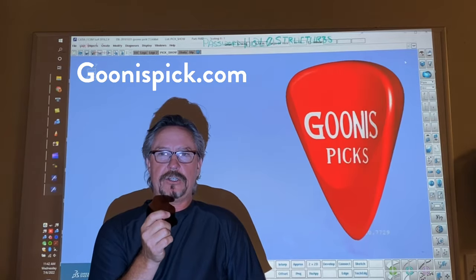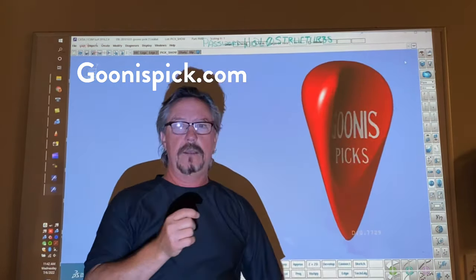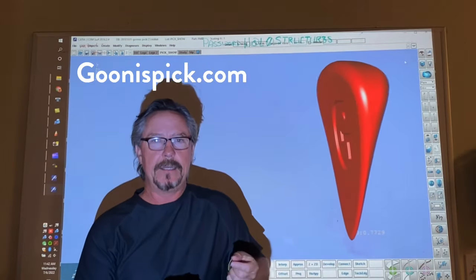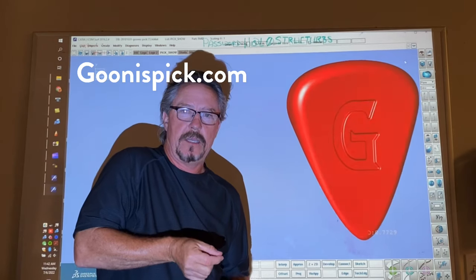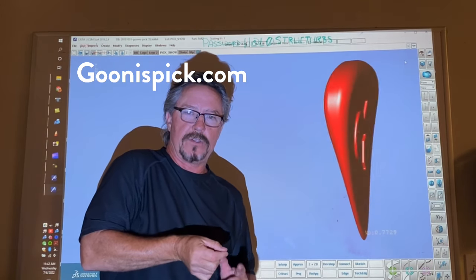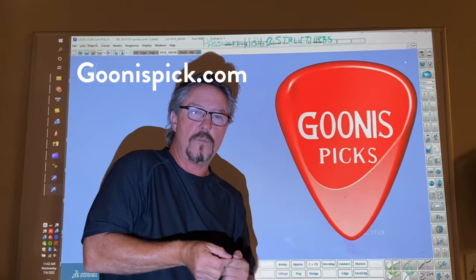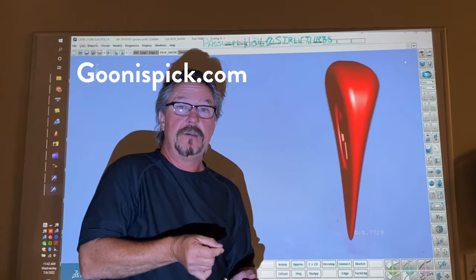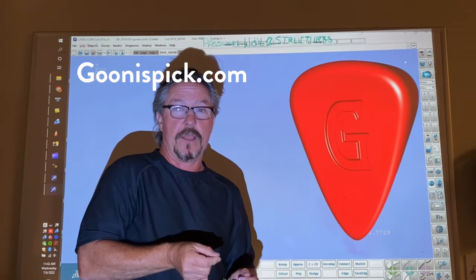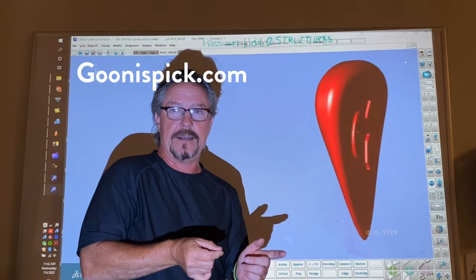Now, if you look at the shape here of this pocket, the pocket is designed so that when you hold the pick, the shape of your finger is going to prevent that pick from moving forward or backwards away from the strings.